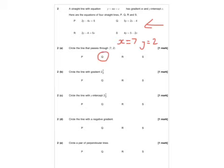Circle the line with gradient 2.5. So I need to essentially rearrange all of these into y equals mx plus c. Right, and so the first one, if I rearrange the first one into y equals mx plus c, I should get a gradient of 2. So it's not that one.